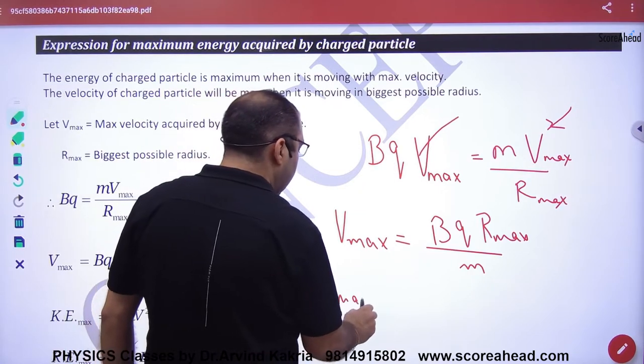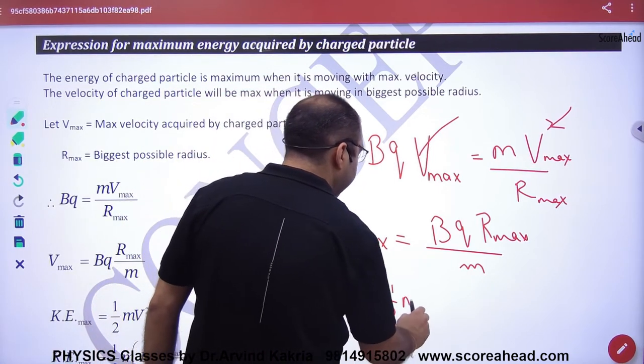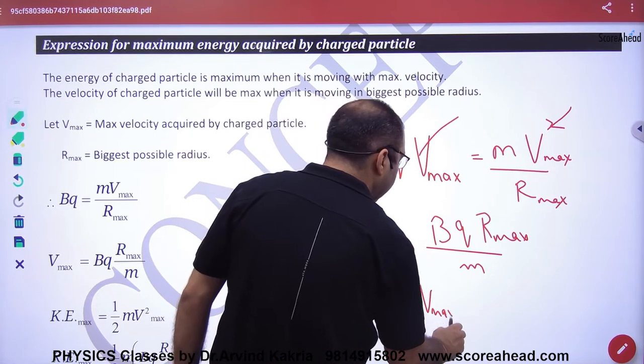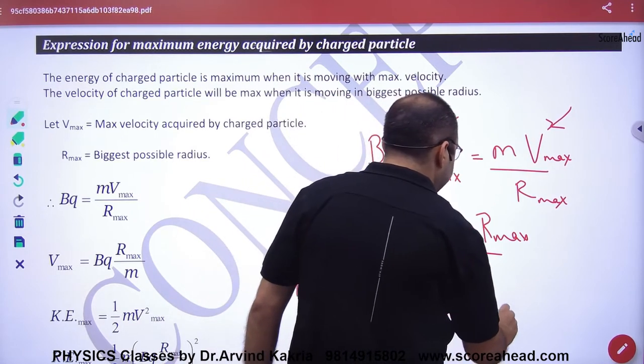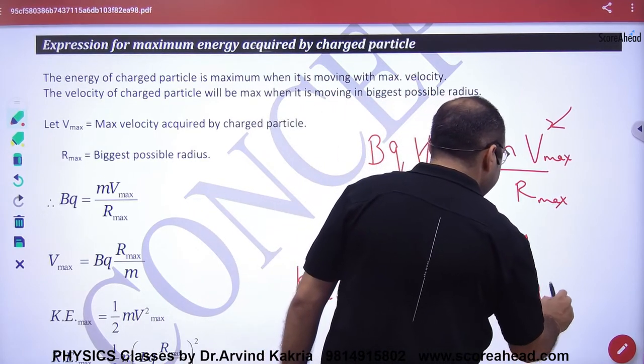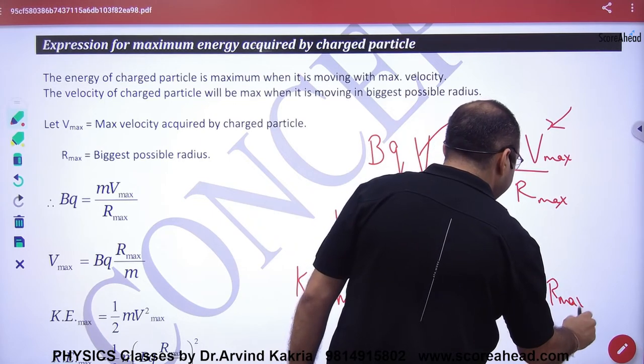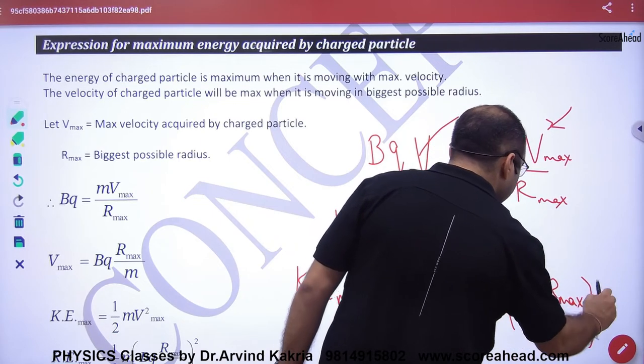will be equal to half into m into vmax square. Half into m into vmax, Bq Rmax divided by m, the whole square.